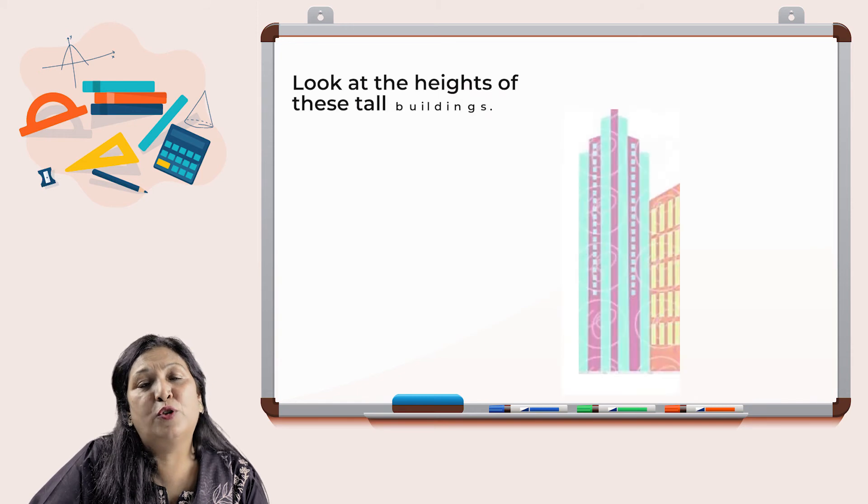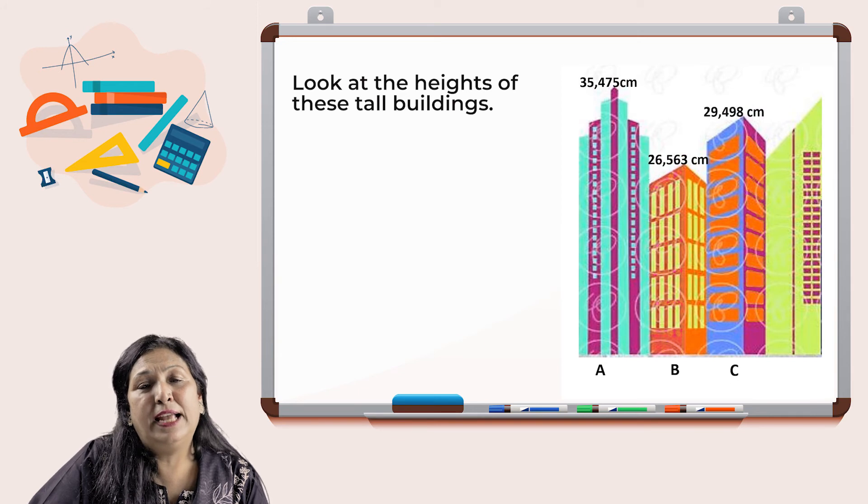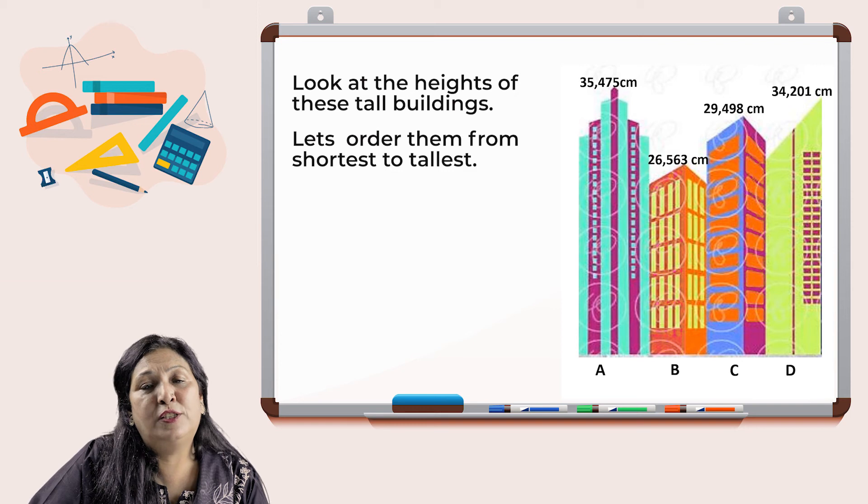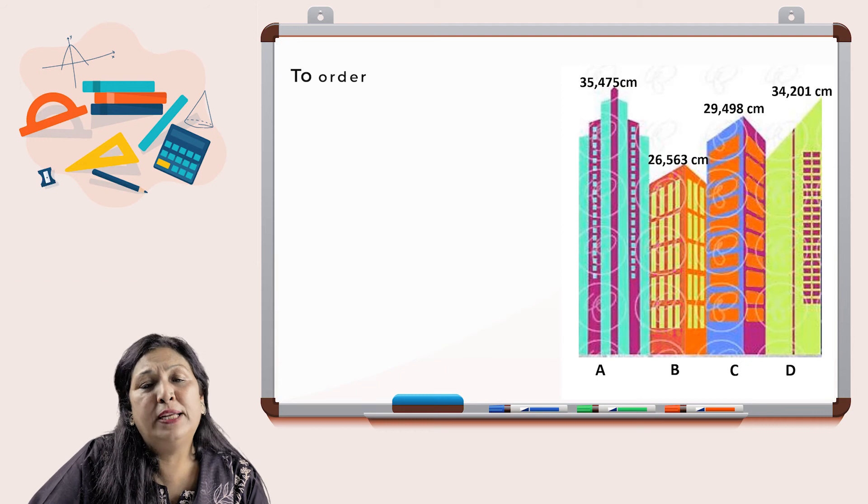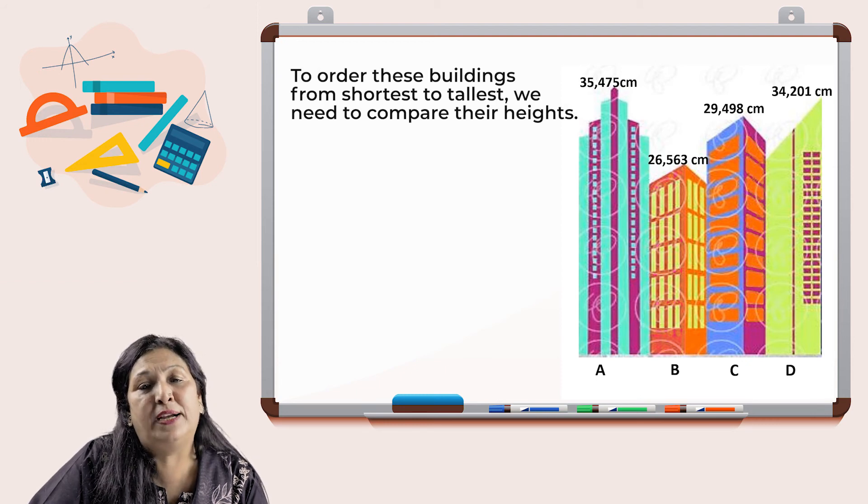The heights of these tall buildings A, B, C, and D. Let's order their heights from shortest to tallest. To order these buildings from shortest to tallest, we need to compare their heights. Take a minute and order their heights.